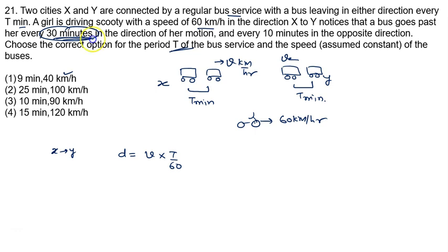And this distance is covered in 30 minutes. Buses pass her every 30 minutes covering this distance. It means we will write relative speed is given by v minus 60 times time. Time is given to us 30 minutes. In hours we will write 30 by 60. So your first equation is vT is given by v minus 60 into 30. This is equation number 1.